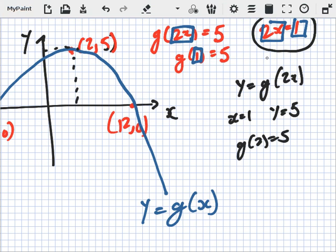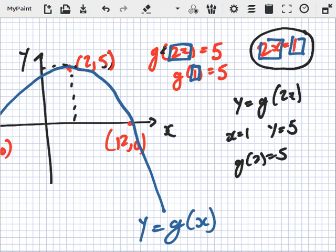This is wrong here. Well no, that's not wrong. 2X equals 1. When X equals 1. Not when 2X equals 1.